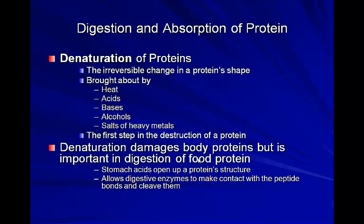Denaturing of proteins is irreversible — you can't put a fried egg back in the shell. Once denatured, a protein doesn't go back to its original form. Denaturing can be done with heat, acids and bases, alcohols, or heavy metal salts. When you eat a hamburger or glass of milk, you first denature and break apart that protein, then use those amino acid building blocks to make your own proteins. Denaturing damages body proteins, but is important in the digestion of food proteins.